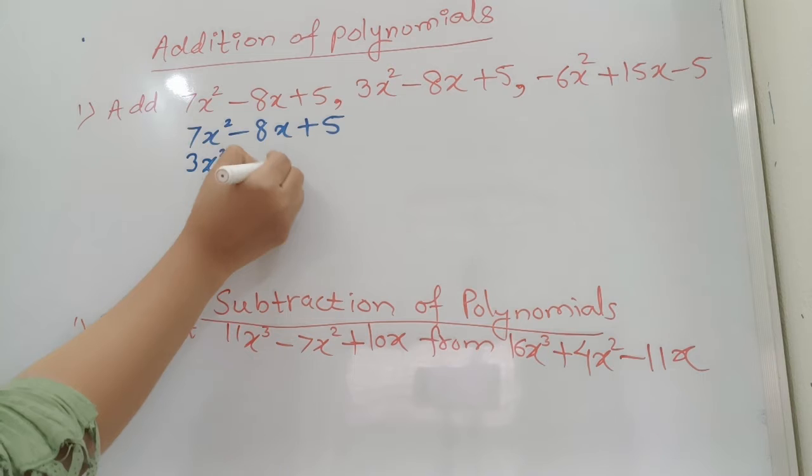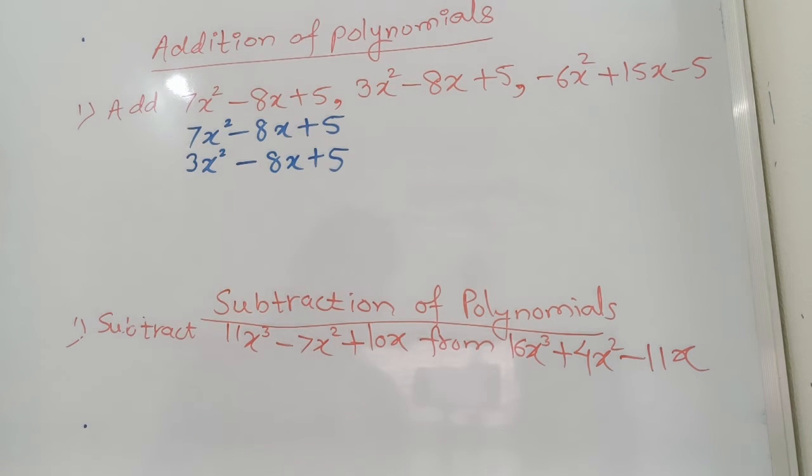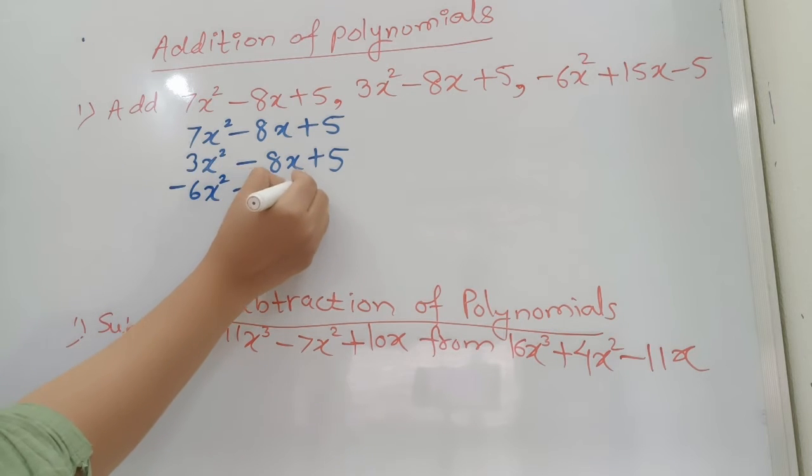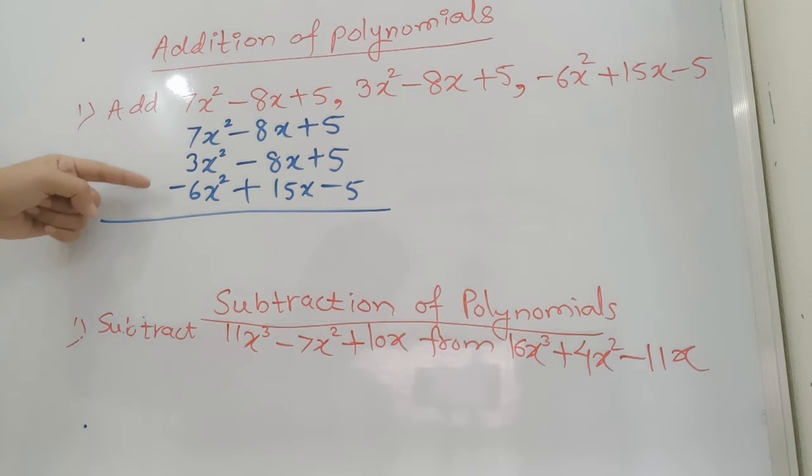I have arranged the two expressions. Now the third one is -6x² + 15x - 5. So here you can see I have arranged all the like terms below one another. Now just perform their addition.